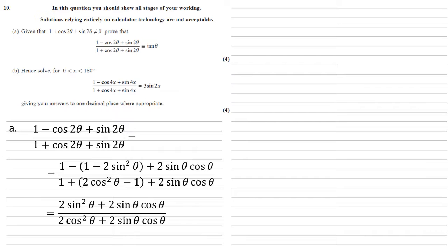Simplifying those we get 2 sine squared theta plus 2 sine theta cos theta on top and 2 cos squared theta plus 2 sine theta cos theta on the bottom. Well all of those terms are multiples of 2, so let's cancel those out.